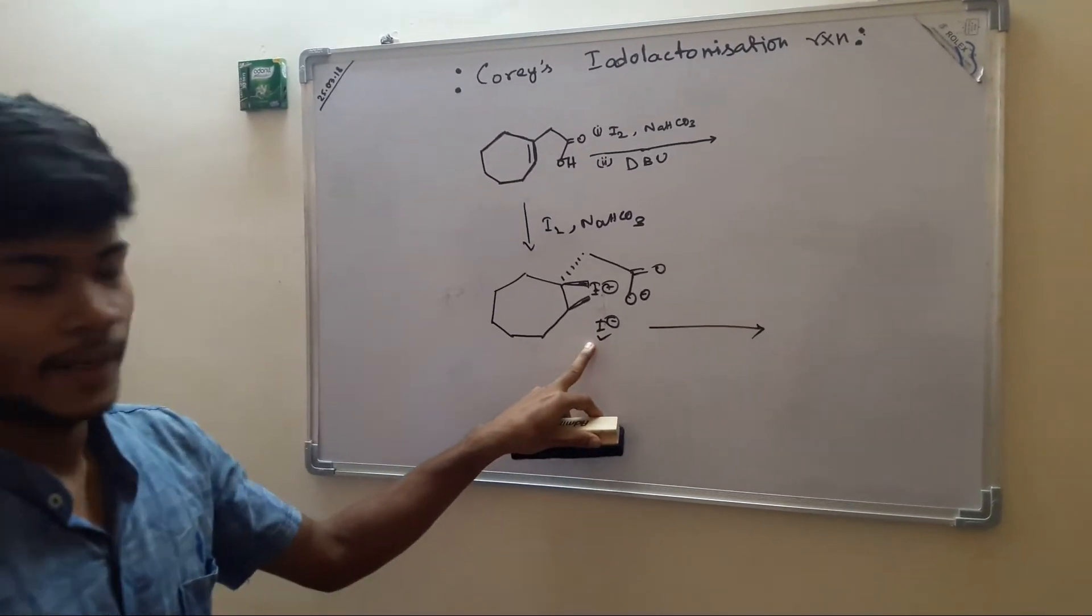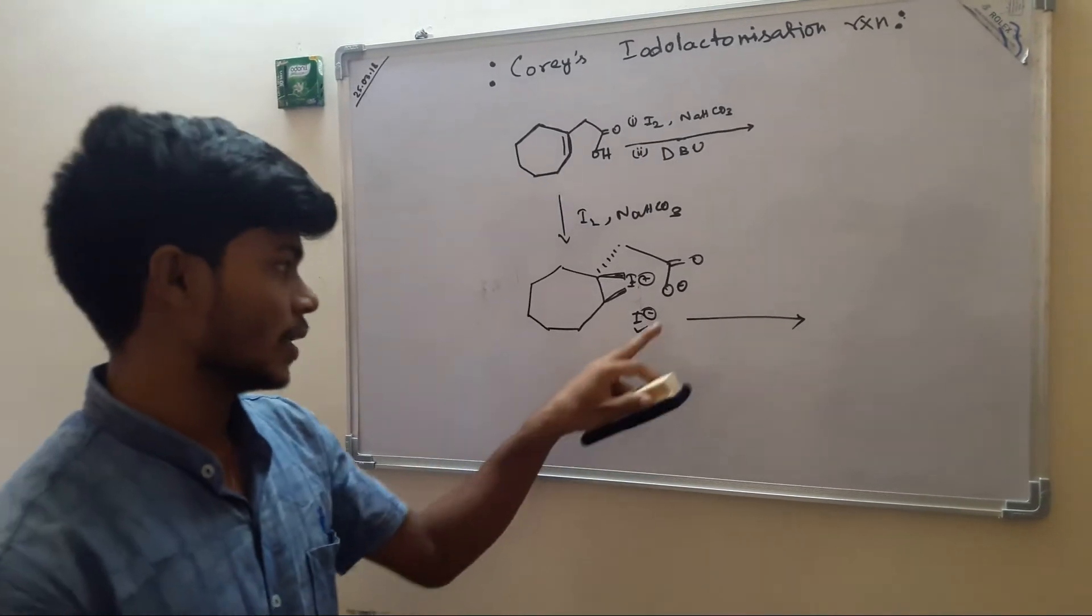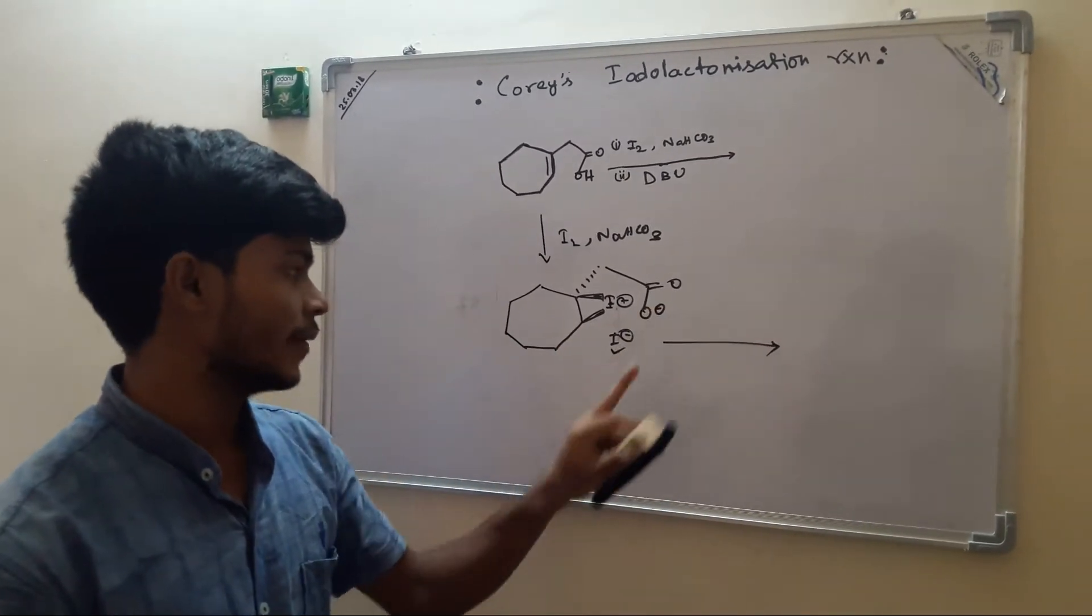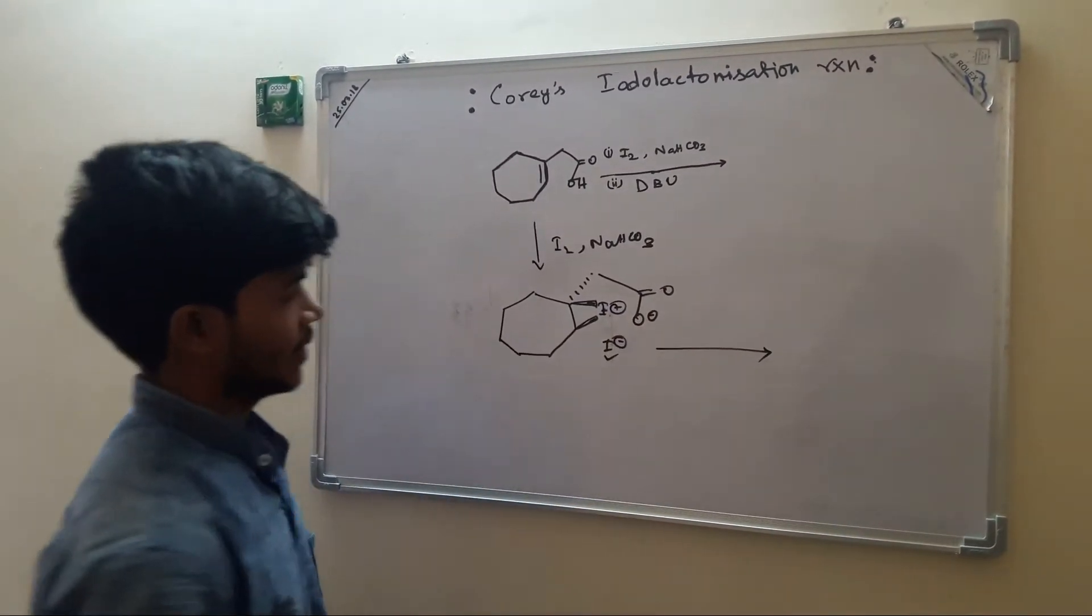As you all expect that iodide is more nucleophilic compared to carboxylate anion, as it is conjugated.